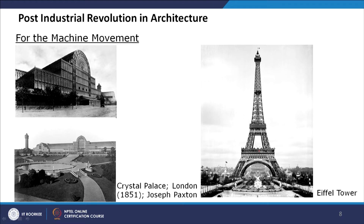Looking at examples of the for-the-machine movement: in the Crystal Palace, the form evolved from the structure. The structural elements are actually the beautifying elements — the steel trusses and steel members visible from outside are the ornamentation. No other ornamentation was superficially added.